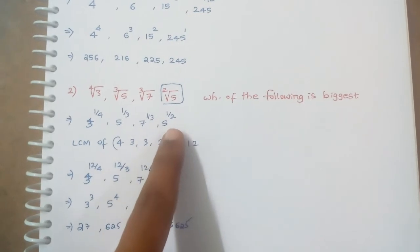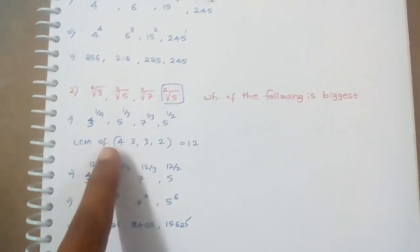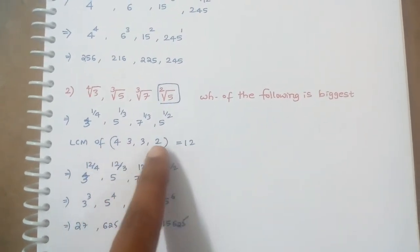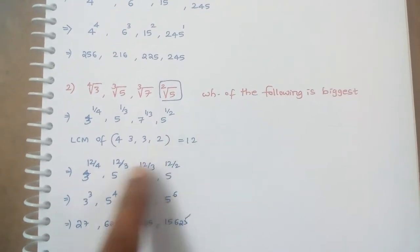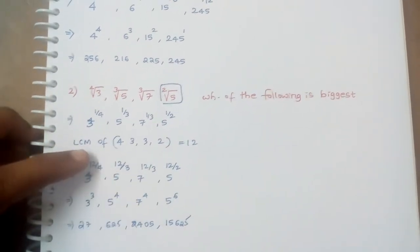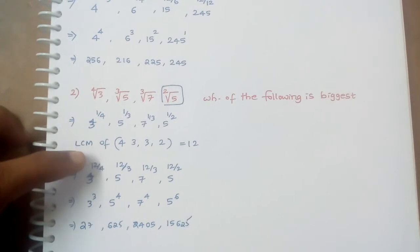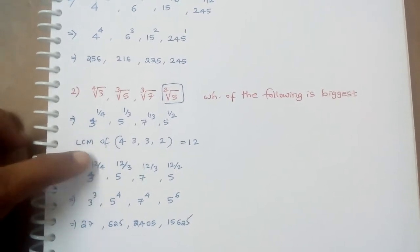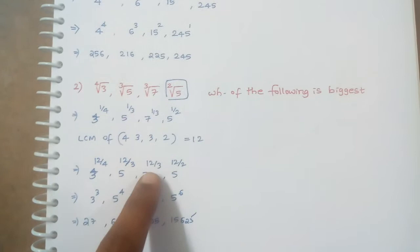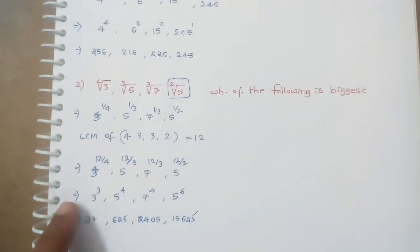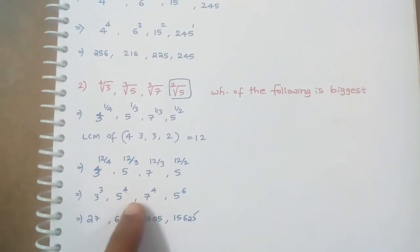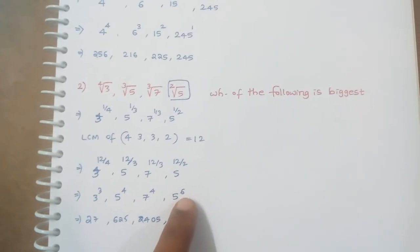So again we have to take LCM of 4, 3, 3, 2. It is again 12. So we have to multiply that power's numerator by that LCM value. That is 12 by 4, 12 by 3, 12 by 3, 12 by 2. So it becomes 3 raised to 3, 5 raised to 4, 7 raised to 4, 5 raised to 6.